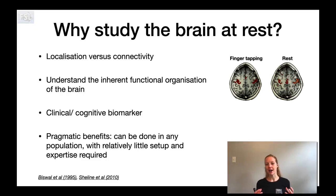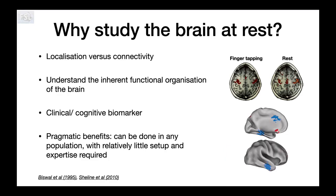Resting state fMRI has high potential for being used as a clinical or cognitive biomarker. This figure shows differences in resting state connectivity between two groups of subjects, where one group were carriers of a genetic risk factor for Alzheimer's disease and the other group were non-carriers. These are young subjects with no differences in cognition or memory performance, and yet this genetic risk variant can be very sensitively detected using resting state connectivity. That shows the potential of resting state fMRI for important clinical and cognitive predictions.